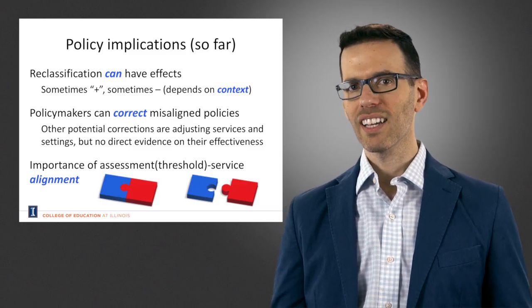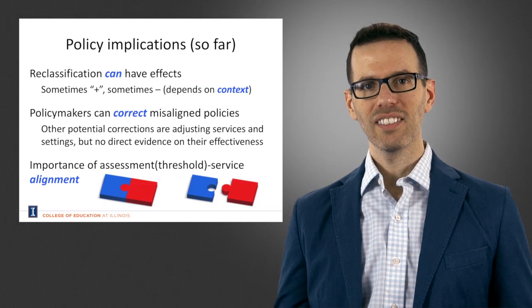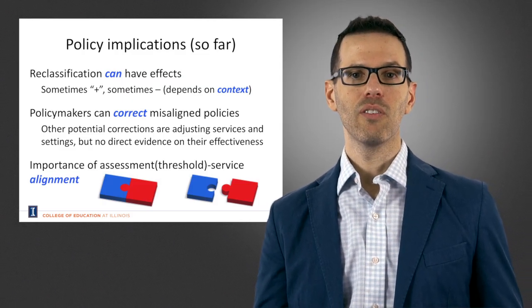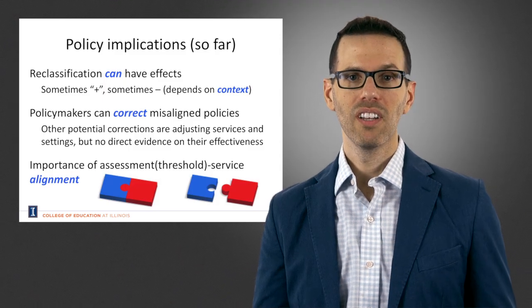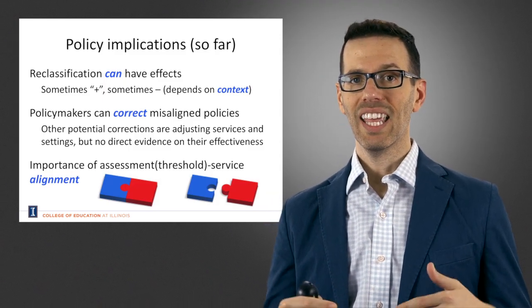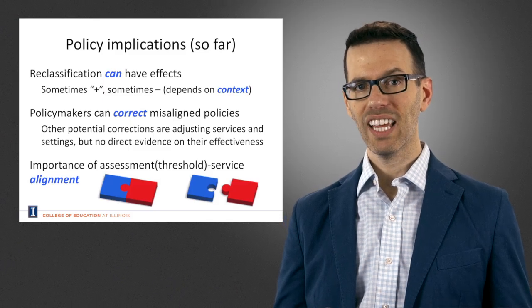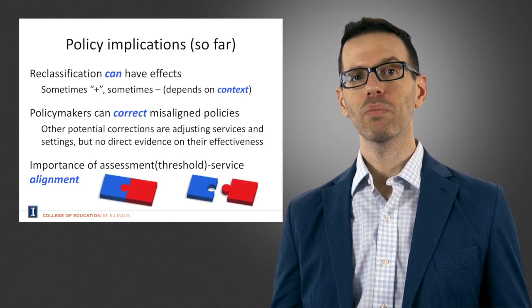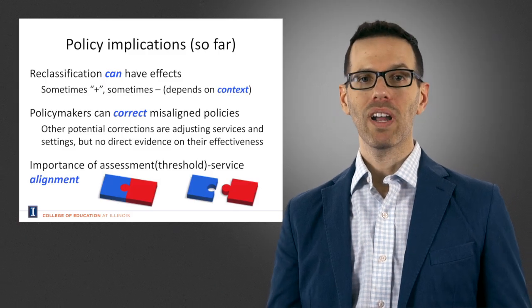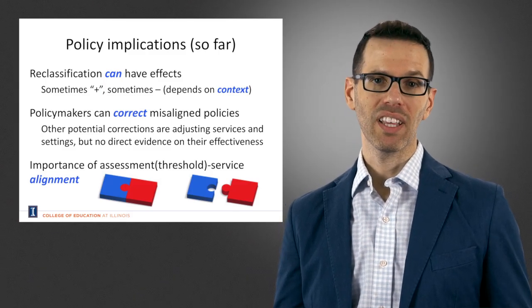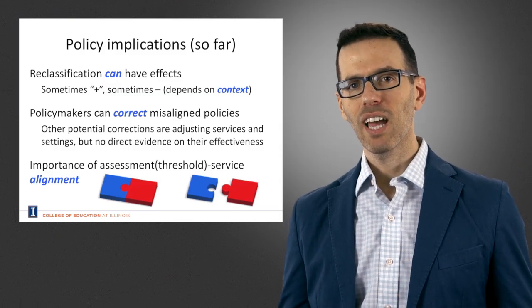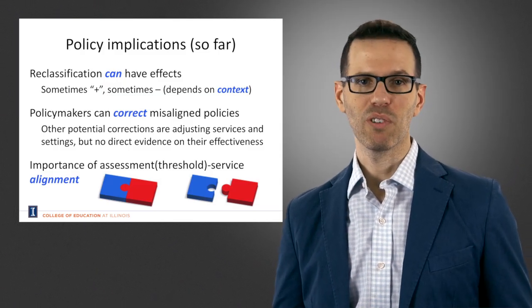In some contexts, students are going to be in these settings for too long and in other contexts they would be removed from them too soon. So we need to think about what the particular services are that are provided to students in each individual school setting and also think about what the particular needs of students are. And we need to think about where the policy criteria are placed too. So all these different things are interacting together and sometimes they might produce positive effects and other times they might produce negative effects.